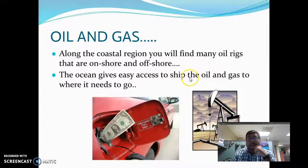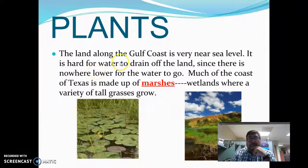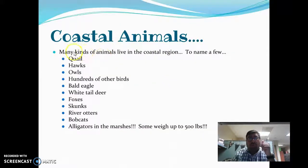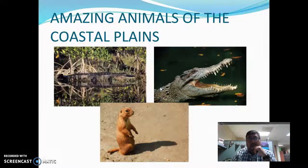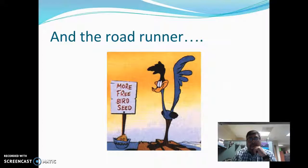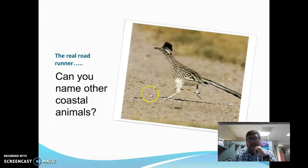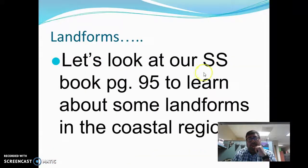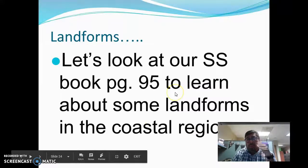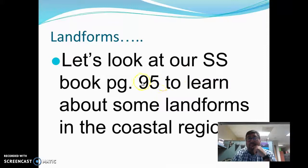The ocean gives easy access to ship oil and gas to where it needs to go — they get the oil and some of it gets sold to other places. You can pause to read about the plants of the Coastal Plains region. There are many coastal animals listed — pause to review them and the pictures of Coastal Plains animals. For landforms, get your Social Studies book, especially page 95, and read to learn about the landforms of the Coastal region.